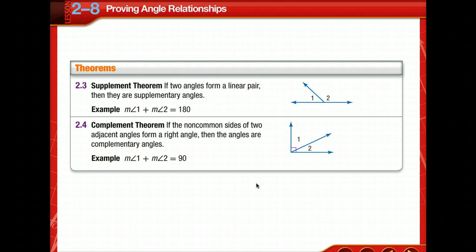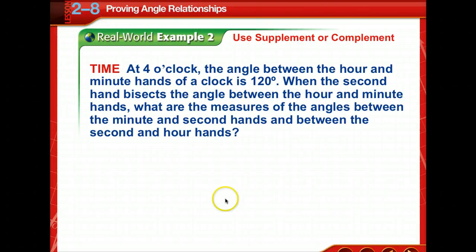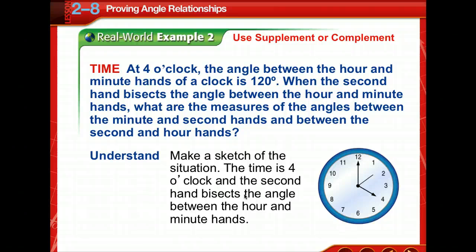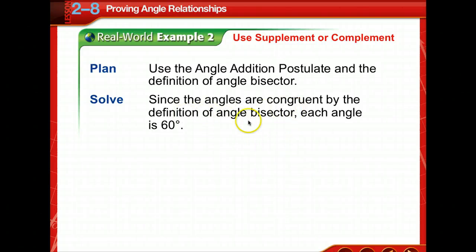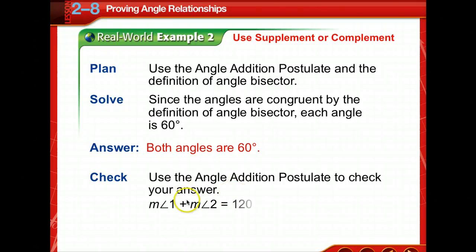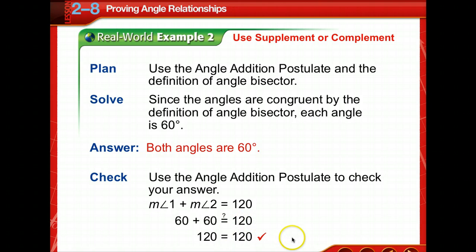We have some supplement and complement theorems to add to your theorems page. The time is 4 o'clock and the second hand bisects the angle between the hour and the minute hands. We're told that angle is 120 degrees. Since this is an angle bisector, each part measures 60 degrees. The angles are congruent by the definition of angle bisector, so each angle is 60 degrees. You can use the angle addition postulate to check: 60 plus 60 equals 120.